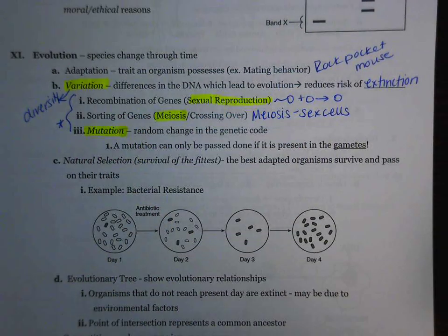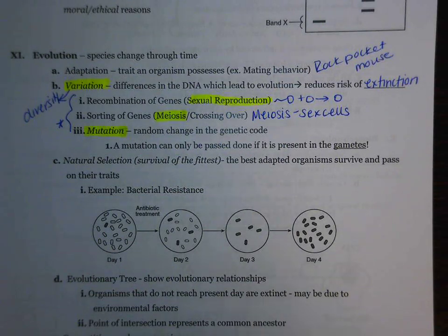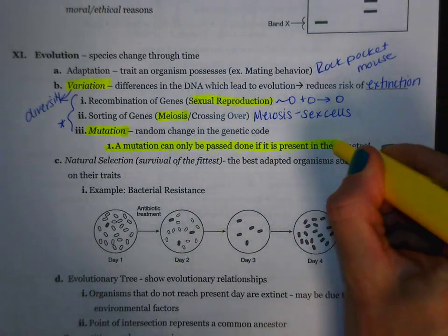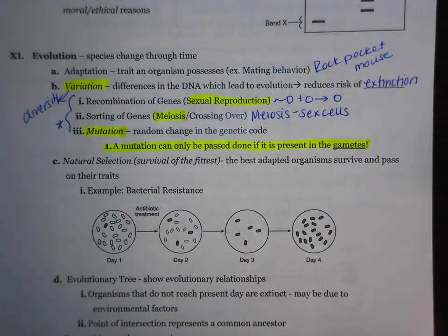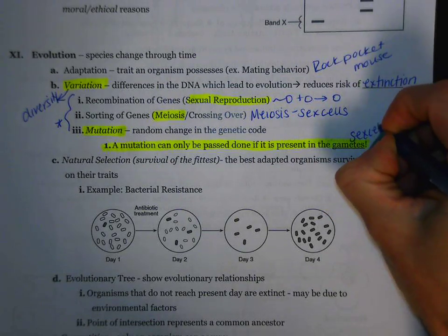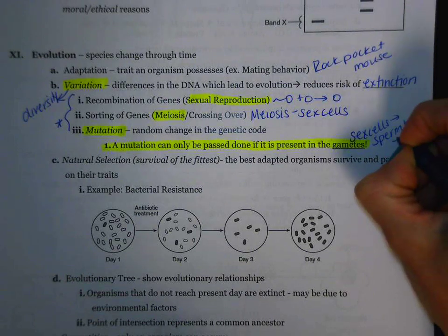Remember, when we're talking about evolution, we're talking about the change in species. So in order for a mutation to affect a species, it has to be present inside of those gametes. Gametes is really just a fancy word for sex cells, and our sex cells are referring to our sperm and egg.